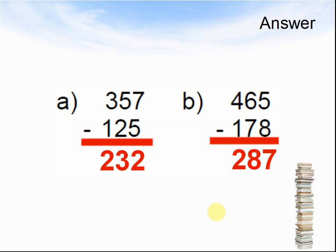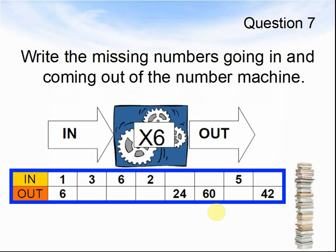Let's look at the next question. Question 7. Write the missing numbers going in and coming out of a number machine. So a number going in, and then you have to times it by 6 and it comes out. So let's see. So a number 1 going in and coming out would be 6, because it's 6 times larger. So 3 going in, what number would come out? Pause the video and fill in the chart.